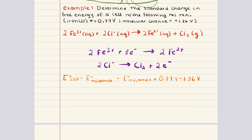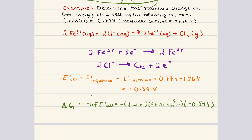The EMF is going to be equal to 0.77 volts minus 1.36 volts, which gives us negative 0.59 volts. Now we can use the EMF to determine the free energy change. Note that two electrons are transferred, so n equals 2. Plugging in: delta G equals negative 2 moles of electrons multiplied by Faraday's constant, 96,485 coulombs per mole of electrons, multiplied by negative 0.59 volts. What we get is 1.14 times 10 to the fifth joules — about 114 kilojoules — which represents a non-spontaneous reaction.